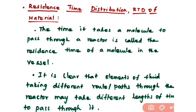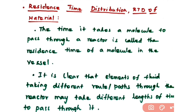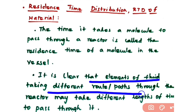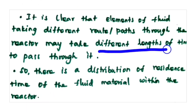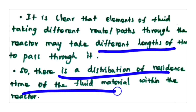In non-ideal reactors, the molecules don't have the same residence time, so you have to calculate the residence time distribution. In non-ideal reactors, elements of fluid take different routes or paths through the reactor, so they take different lengths of time to pass through. There is therefore a distribution of residence times of the fluid material within the reactor.